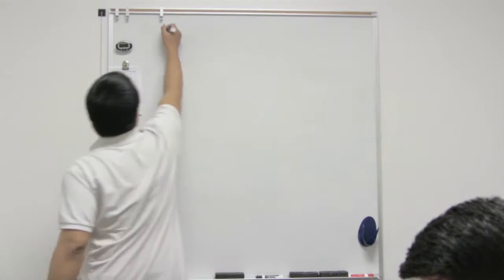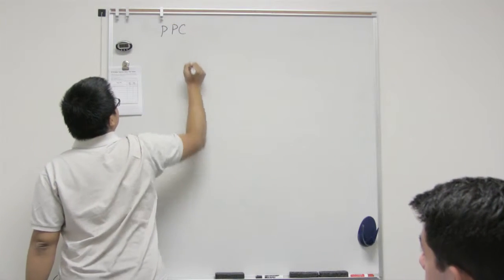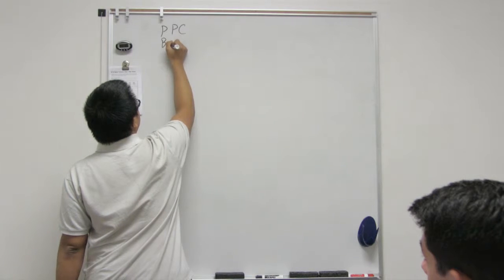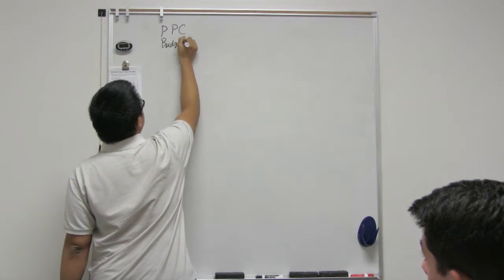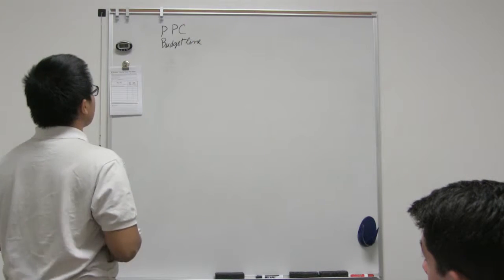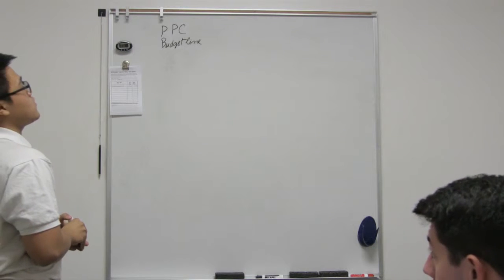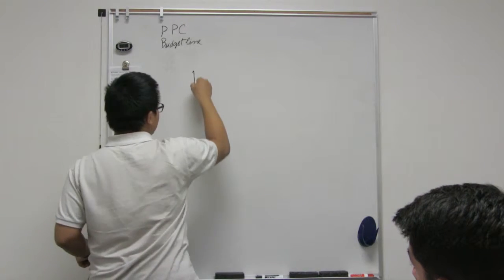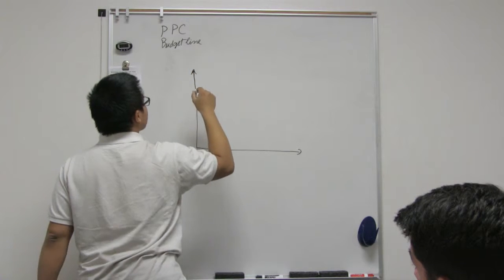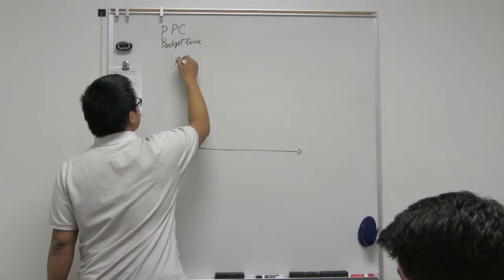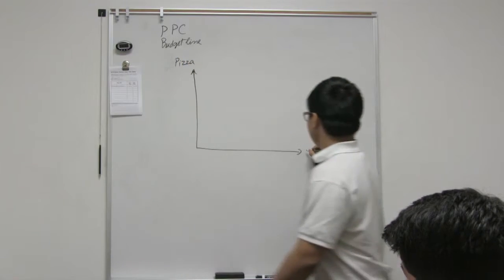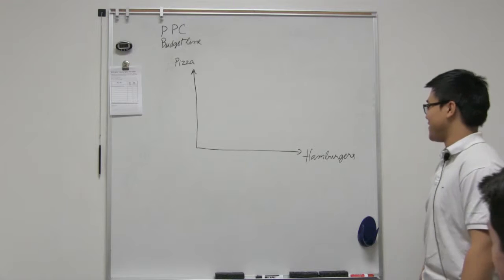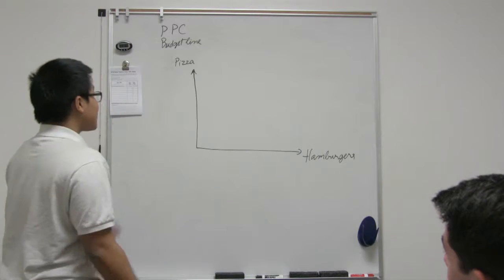Okay, so you have the PPC, which is production possibility curve, and the budget line. If you understand, you will see that the two things are really similar. Basically, you have two goods.